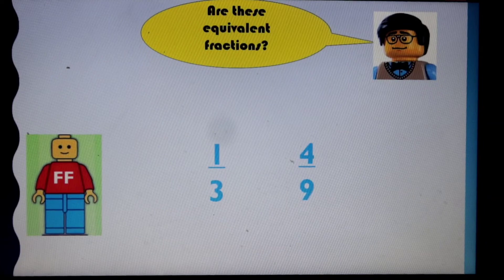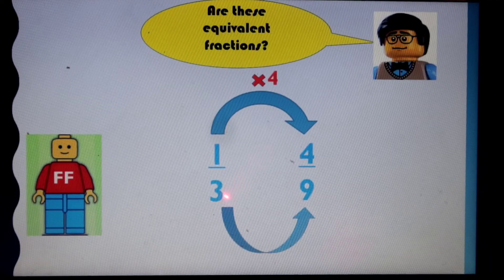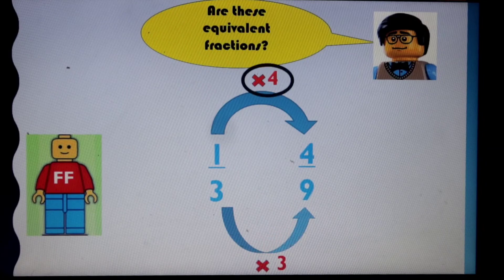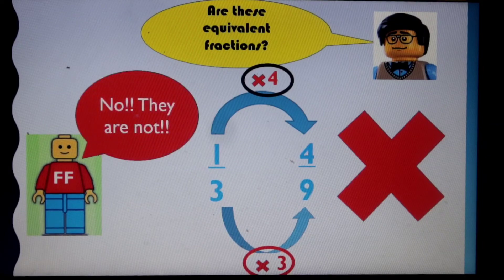What about the next one? We've got one third and four ninths. You can pause this as you do it and see if you've got it correct. What must we multiply by one to make four? The answer is four. We go to the denominator on the bottom, three. What must we multiply by three to make nine? Three times three equals nine. Now circle those numbers — we've got four and three. They are not equivalent fractions.